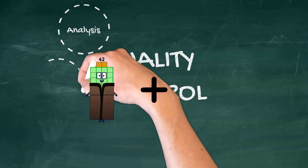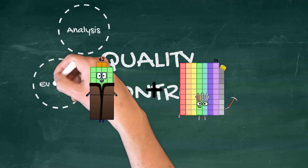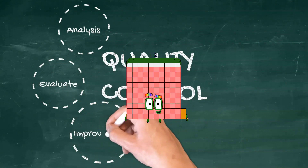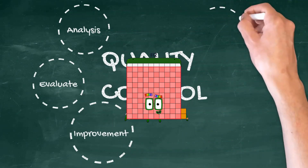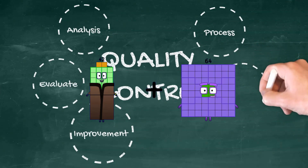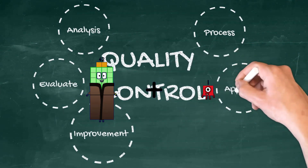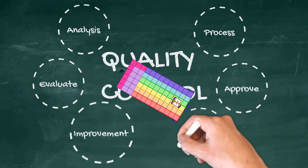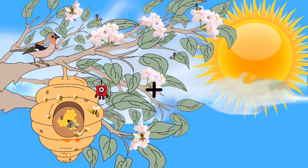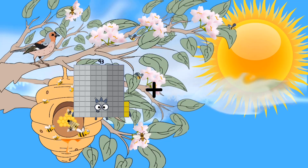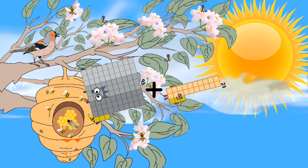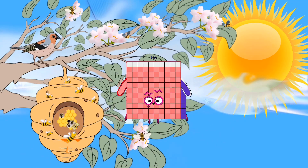42 plus 70 equals 112. 42 plus 78 equals 120. 93 plus 23 equals 116.